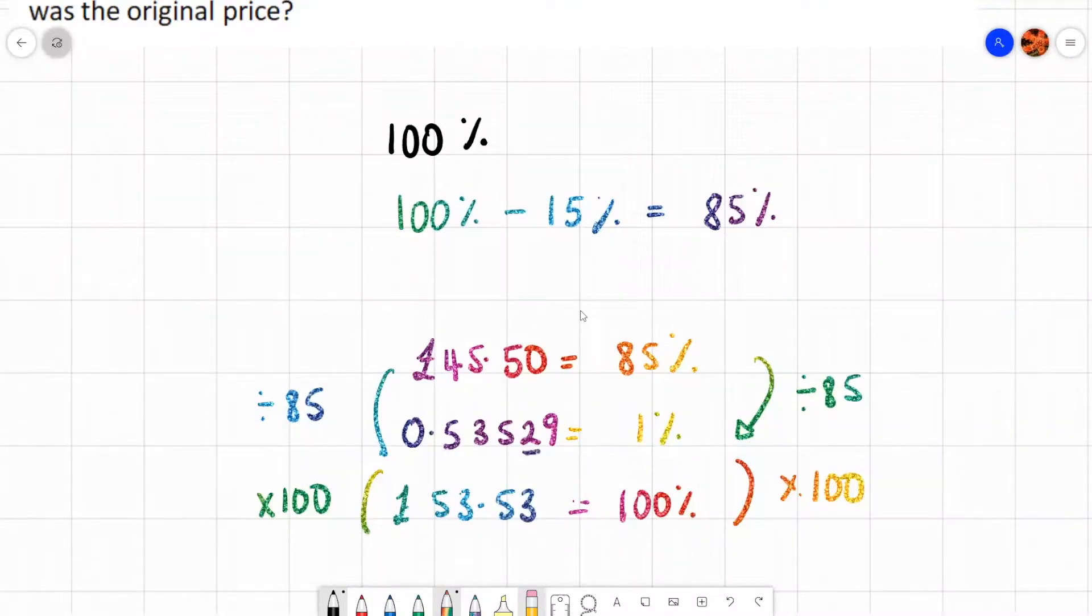I'm just going to round it up because obviously the next digit here is nine. So the two becomes a three. That was the original value of the skirt that Amber bought. And then obviously when it was reduced by 15%, she paid £45 and 50p for it. Okay. Let's have a look at another example.